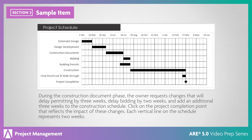During the construction document phase, the owner requests changes that will delay permitting by three weeks, delay bidding by two weeks, and add an additional three weeks to the construction schedule. Click on the project completion point that reflects the impact of these changes. Each vertical line on the schedule represents two weeks. The correct answer is a six-week delay.